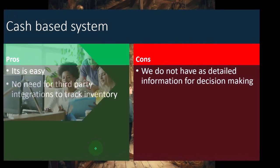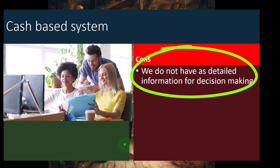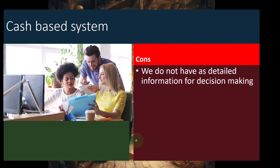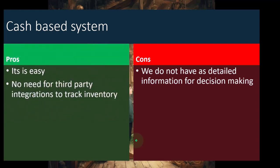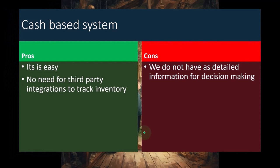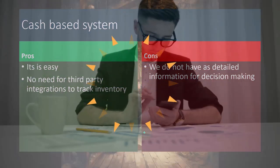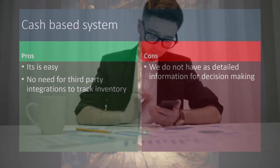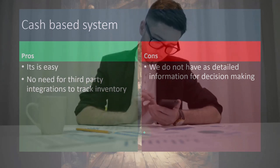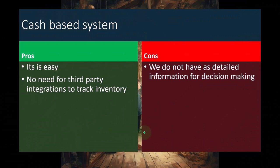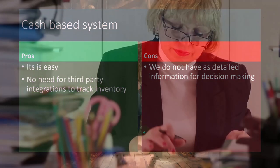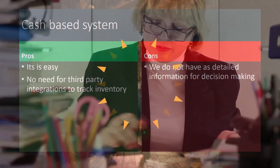On the cons side, we do not have as detailed information for decision making. We're not actually tracking the inventory as we go. If we were using a periodic inventory system, we would possibly do that at the end of each month, giving us more relevant information for purchasing decisions and profit margin analysis. Here, we're only making the adjustment at the end of the year for ending inventory, primarily for taxes. The point of the accrual method system is best practices for internal decision making purposes.